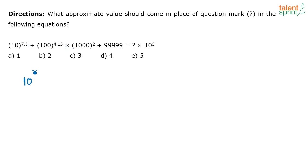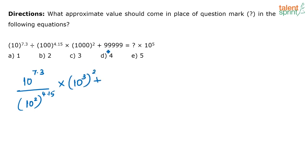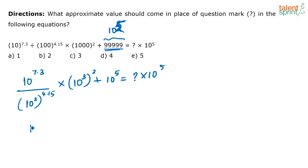What is given: 10 to the power 7.3 divided by 100 — which is 10 squared — whole to the power 4.15, into 1000 — which is 10 cubed — whole squared, plus 99999, which is 5 nines. Five 9s is very close to 10 to the power 5. So you can approximate and take this as 10 to the power 5, equal to question mark times 10 to the power 5. Now simplify: 10 to the power 7.3 — the denominator piece becomes 10 to the power 6.